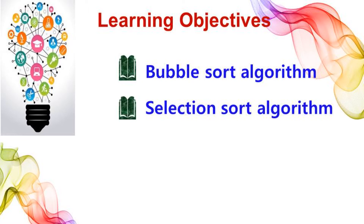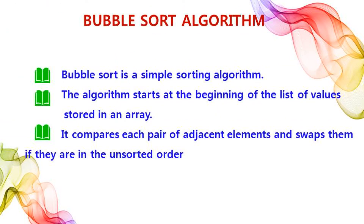Bubble sort algorithm is a simple sorting algorithm. It repeatedly steps through the list, compares adjacent elements, and swaps them if they are in the wrong order. This process is repeated until the list is sorted. This type of sorting is used when the data is small, because the list of elements to be sorted is low.